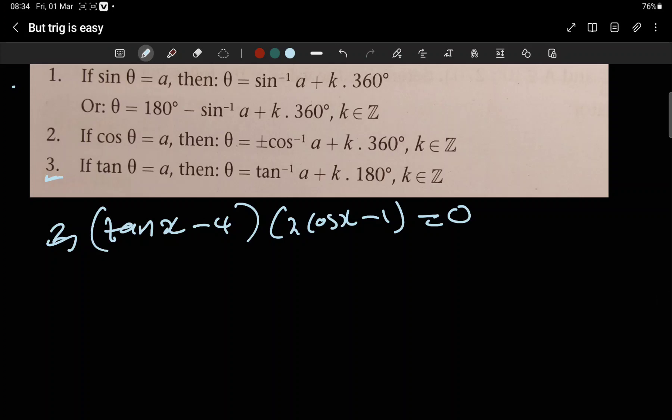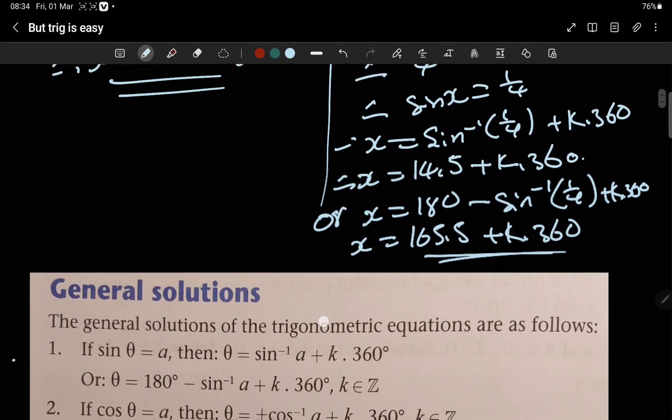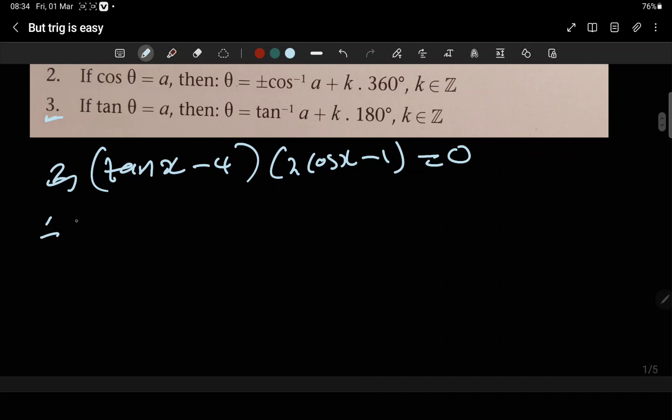Find the general solution. Remember this is the little squares and give the general solution. In this case, let's say this is either tan(x) minus four equals zero, or the other side, two cos(x) minus one equals zero.